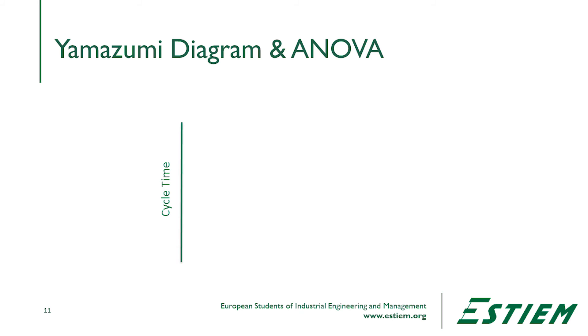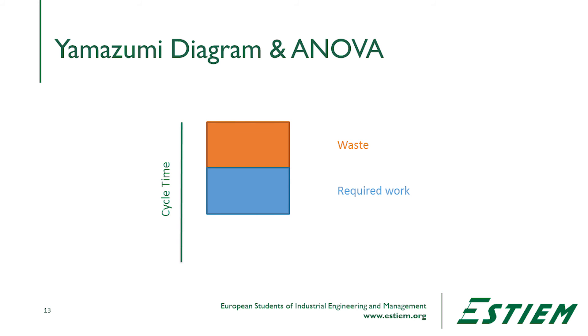Another thing we can do is take the Yamazumi diagram and process that ANOVA data the same way. We go into the ANOVA table and look at each process step, analyzing how much of the time we are creating different types of waste. Simplifying it, we categorize work as: required non-value-adding, totally non-value-adding waste, and value-adding work. Step by step through the process, we can see the contribution of each of those three waste categories per process step. Ideally, we want only value-adding work in each step, so this tells us where to investigate further.